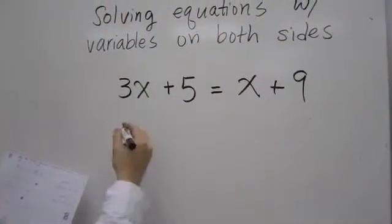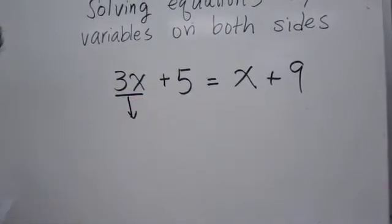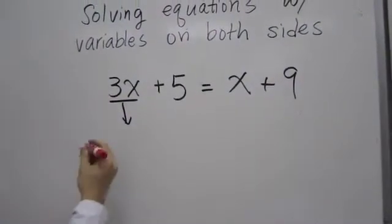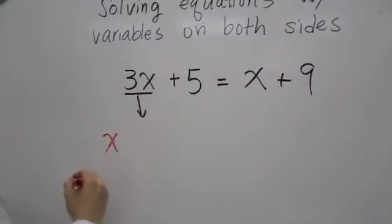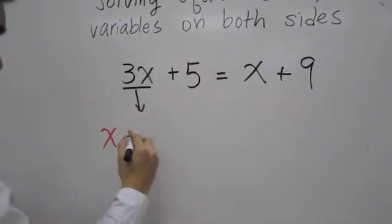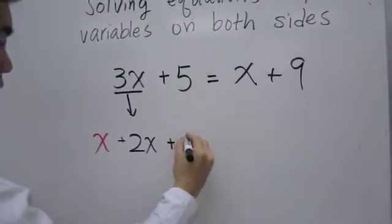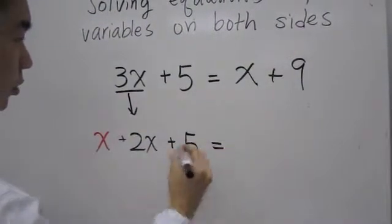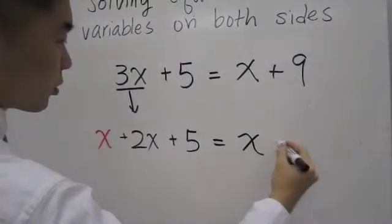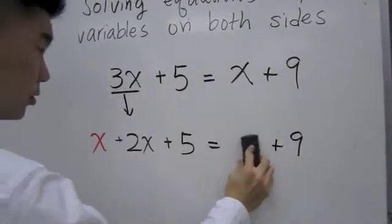3x plus 5 is equal to x plus 9. I'm going to decompose the 3x so that it looks like the other side. I can decompose the 3x into x plus 2x which is what's left over. 3x becomes x plus 2x. I'm going to bring everything else down. So I have x plus 2x plus 5 is equal to x plus 9. Now check it out.